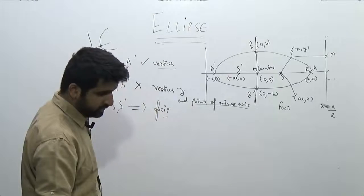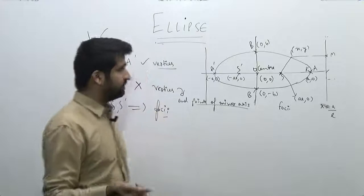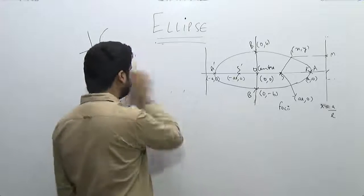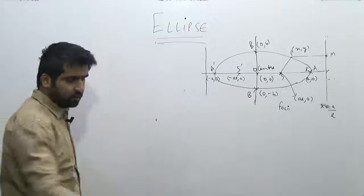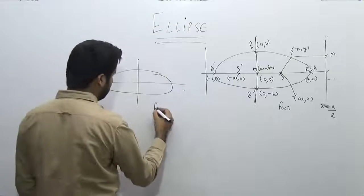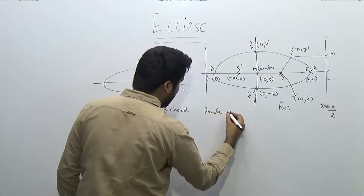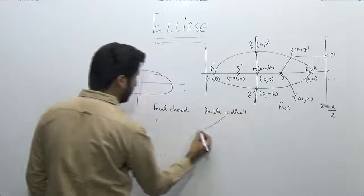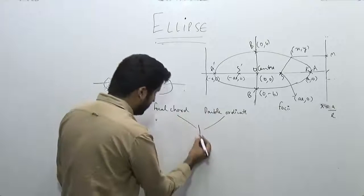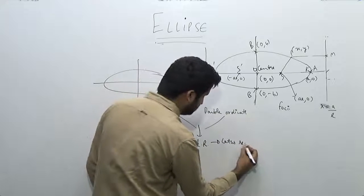Similarly, we'll have a concept of chord as we studied in the case of a parabola. We have two types of special chords: the first special chord is the focal chord, and the second is the double ordinate. A double ordinate through the focus is called the latus rectum. I'll always write latus rectum as LR.